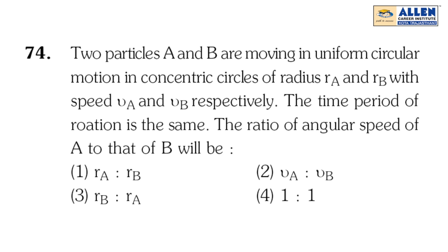The question is: two particles A and B are moving in uniform circular motion in concentric circles of radii RA and RB with speed VA and VB respectively.